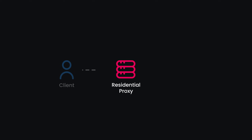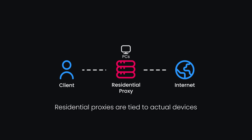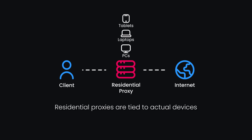Residential proxies are real devices like laptops, tablets, or desktop computers connected to local networks, each with a unique IP address tied to a specific physical location. When you connect through one of these proxies, it shares its IP with you, so your browsing appears to come from that IP address and location.